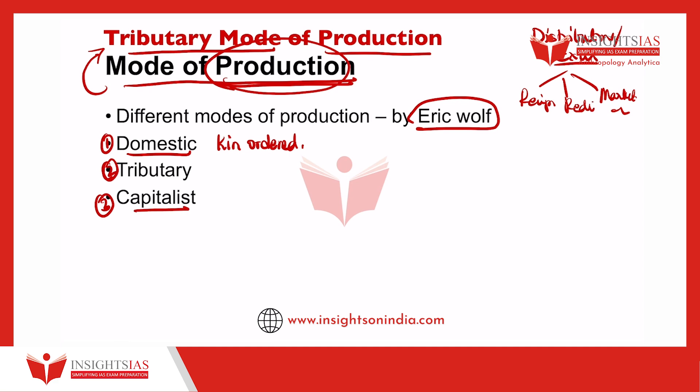In domestic or kin-ordered production, the work is organized on the basis of family relationships and does not necessarily involve formal social domination and control. There is no formal structure and the power is not concentrated in one single person — it is the family that regulates the production.